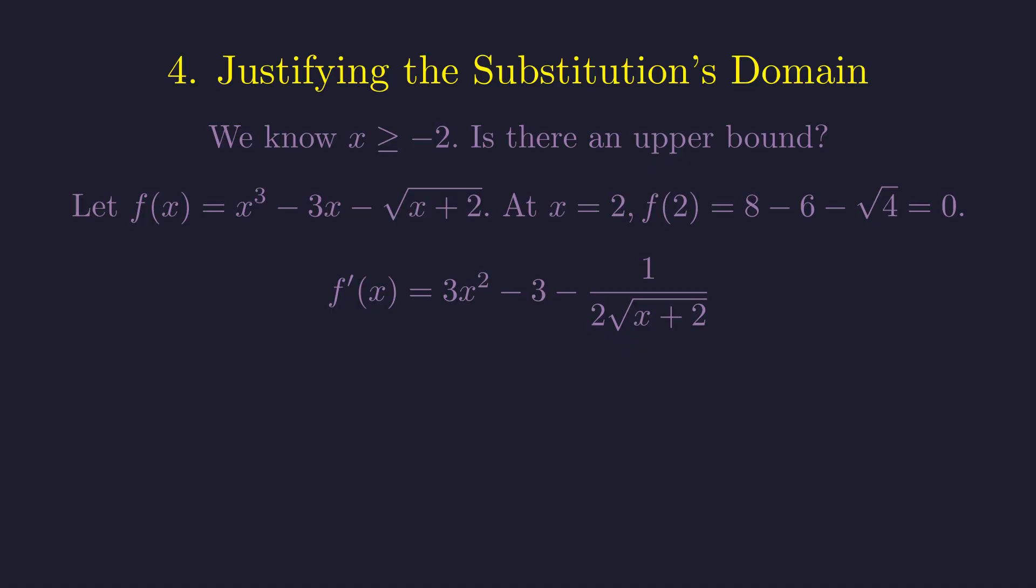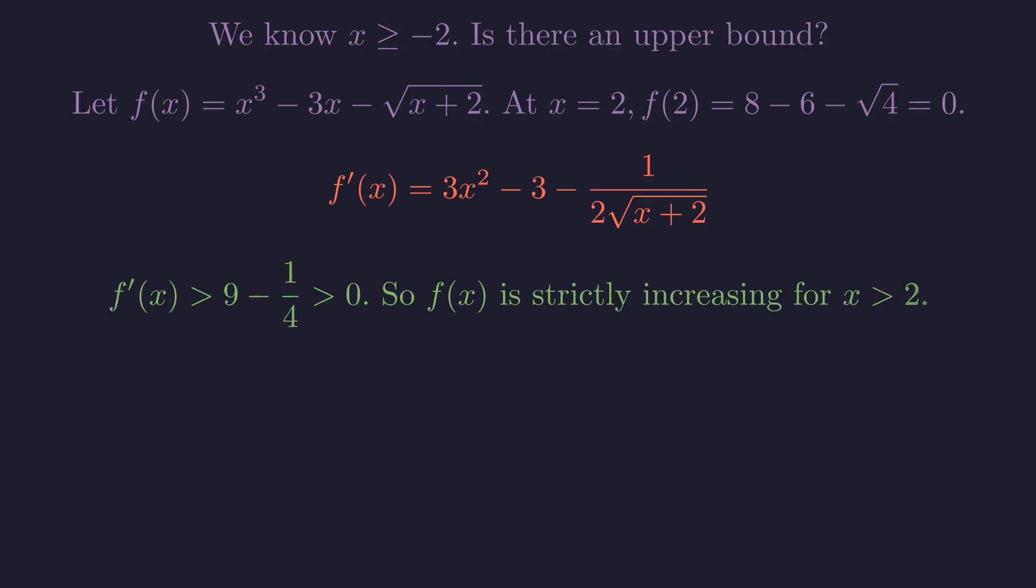Now, what happens for x values bigger than 2? The derivative will tell us whether this function is increasing or decreasing. For any x bigger than 2, the first term 3x squared minus 3 is definitely larger than 9. The second term is positive but quite small, less than 1 fourth.